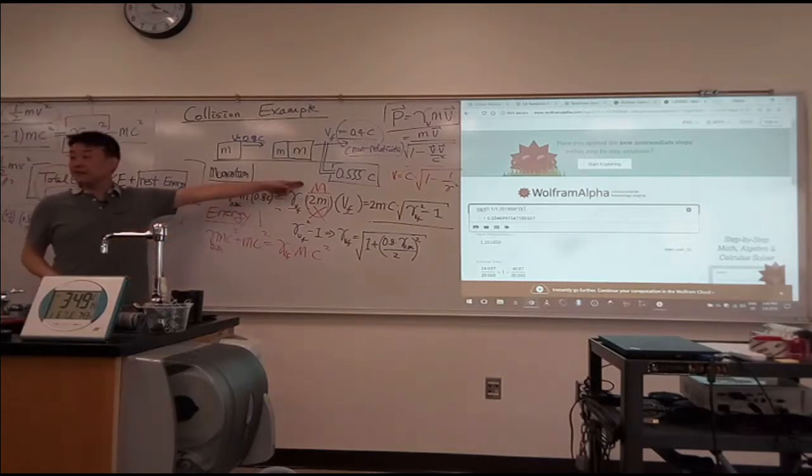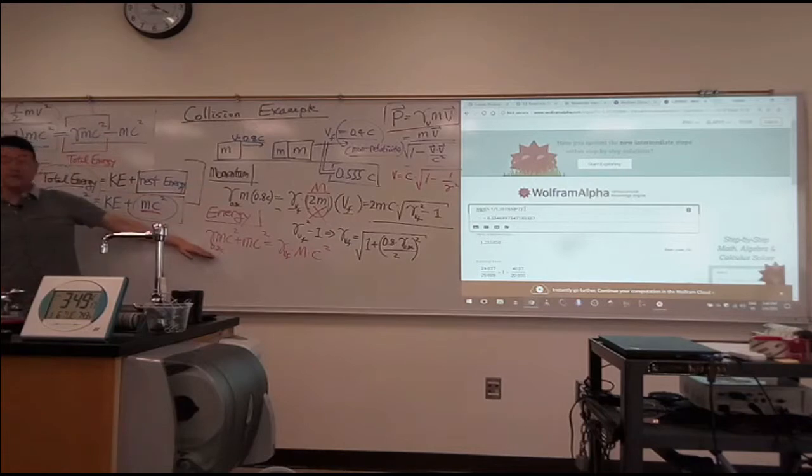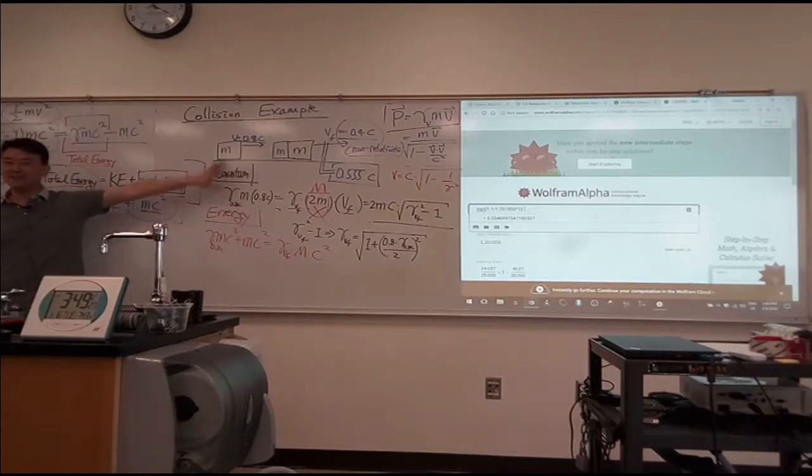So you know, you have one more unknown, but you have one more equation to solve that unknown with. So I guess I don't have 30 seconds. It's probably not enough time to finish it. I kind of don't want to anyway. There's a better way to do this than what I'm doing here.